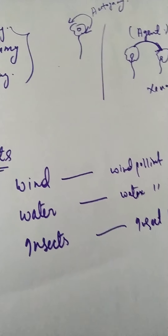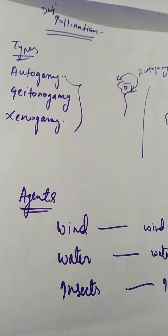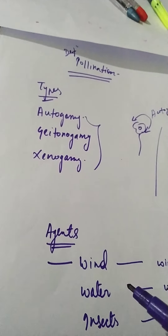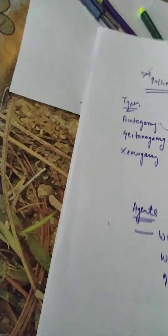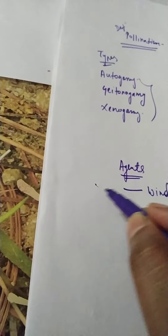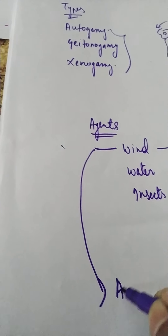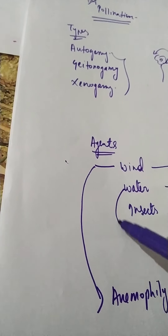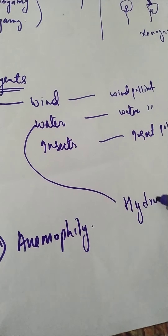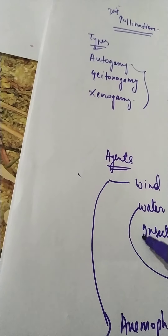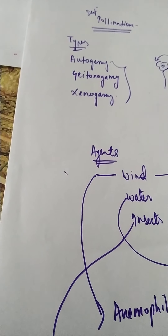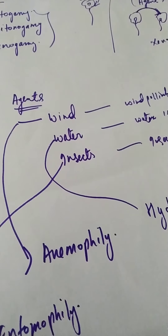There are also scientific names used for these. For wind pollination, it is called anemophily. For water pollination, it is called hydrophily. For insect pollination, it is called entomophily. You have to remember these terms.